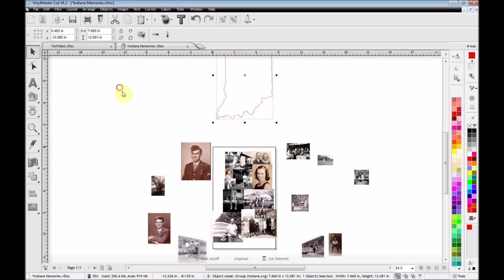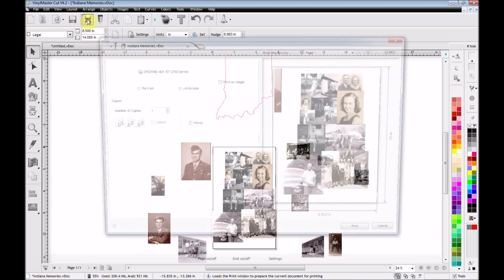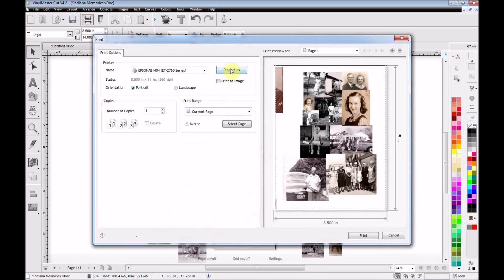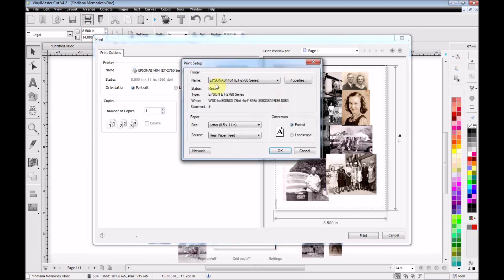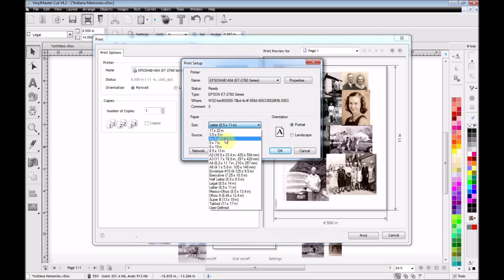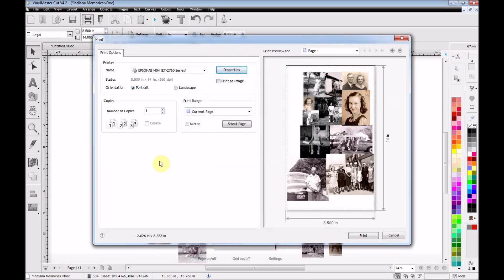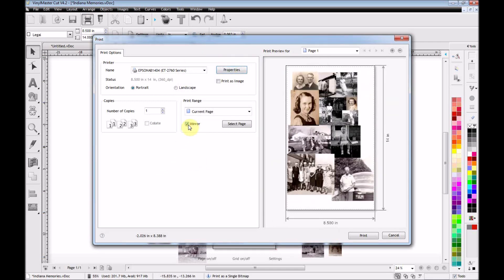Once I had all the photographs arranged the way I wanted, I'm ready to hit the print button, and then I need to make sure that I change the paper size to legal size, eight and a half by 14, because that's what I'm going to use to run this on. And then also, I need to make sure I select for a mirror image, and then I'm ready to hit print.